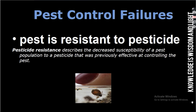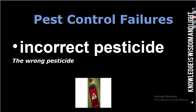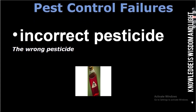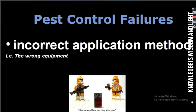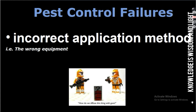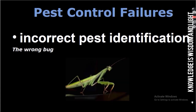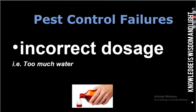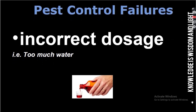Pest resistance describes the decreased susceptibility of a pest population to a pesticide that was previously effective at controlling the pest. Other causes of failure include: use of the incorrect pesticide, incorrect application method such as wrong equipment, incorrect pest identification, and incorrect dose such as too much water.